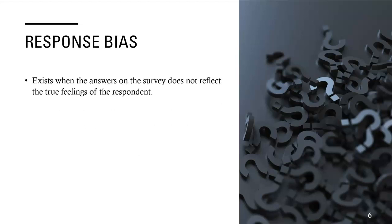The third type of bias is response bias. This exists when the answers on the survey do not reflect the true feelings of the respondent. This can be due to a number of things, including interviewer error. It's really important who you use to interview participants. Some interviewers can make people feel comfortable; some can be intimidating. If people don't feel comfortable and feel intimidated, they may not tell the full truth, so interviewer error can happen.